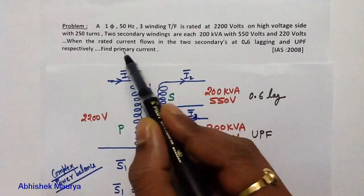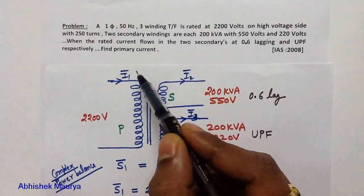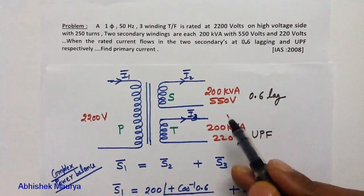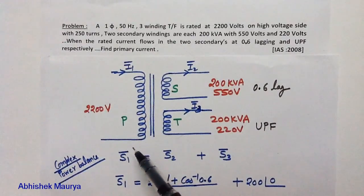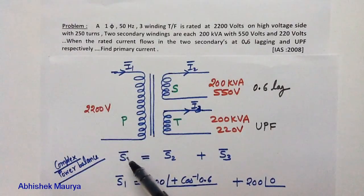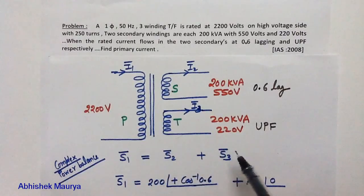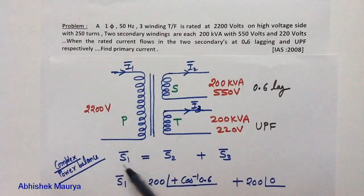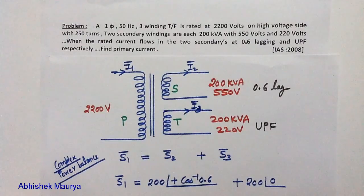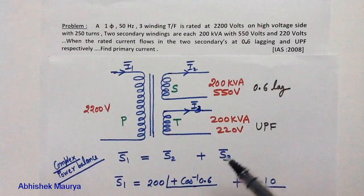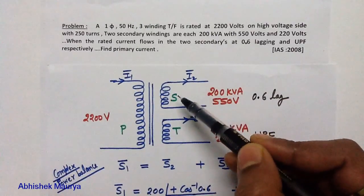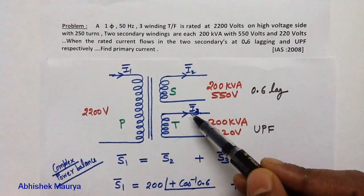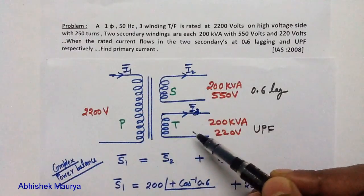So finally we have to calculate the primary current I1. To solve this problem we will use the technique of complex power balance. The meaning of complex power balance is that the total input complex power equals the total complex power output. The complex power output will be at the secondary winding and also at the tertiary winding.